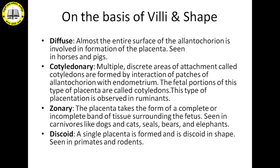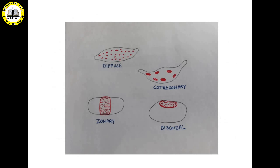In zonary placenta, there is one zone which forms a complete or incomplete girdle-like structure surrounding the fetus. It is present in cats and dogs. While in discoidal placenta, chorionic villi are present only in one place, forming a disc-like round structure. That is why it is known as discoidal type of placenta.